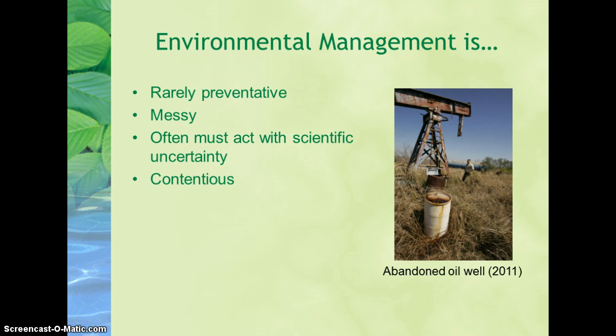Natural resource management is often messy, meaning that everything does not always go as planned, past disturbances can include undesirable substances, and the actual management actions can cause unforeseen problems too. Another important point is that we rarely have scientific certainty when it comes to environmental problems. We must act without knowing all of the information, which leads to best professional judgment and uncertainty.